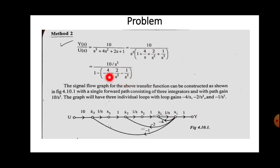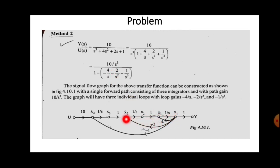Drawing the signal flow graph: three integrators are placed in series with nodes x₃-dot, x₃, x₂-dot, x₂, x₁-dot, x₁. The forward path gain is 10 from U(s) to x₃-dot. Loop −4/s feeds back from x₁ to x₁-dot (one integrator). Loop −2/s² feeds back from x₁ to x₂-dot (two integrators). Loop −1/s³ feeds back from x₁ to x₃-dot (three integrators).